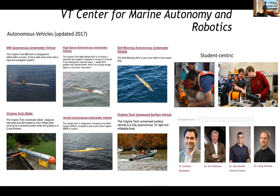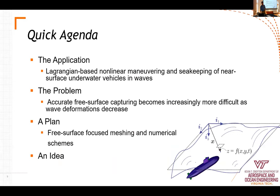The Virginia Tech iShip team — innovative ship design — works on high-speed propeller design, high-performance planing crafts in waves, surface-piercing super-cavitating hydrofoils, and my work on viscous non-linear seakeeping and maneuvering. The larger application of my work is a Lagrangian-based non-linear maneuvering and seakeeping model for near-surface underwater vehicles operating in waves — 'Lagrangian' here referring to Lagrangian dynamical motions based on energy, not Lagrangian particles. The key problem is accurate free surface capturing becoming increasingly difficult as wave deformations caused by underwater bodies decrease.